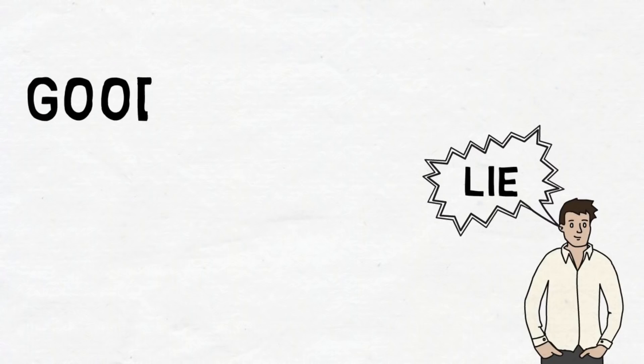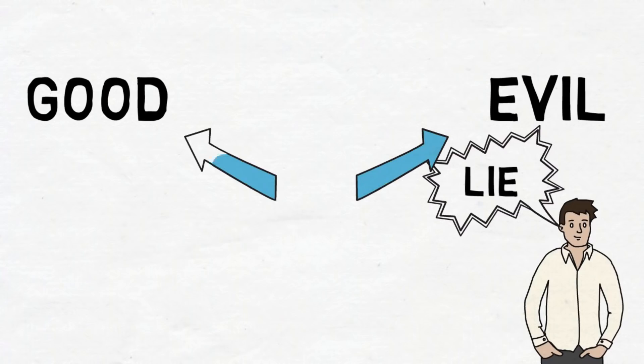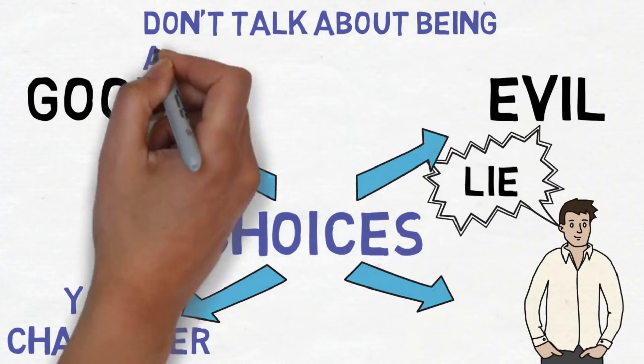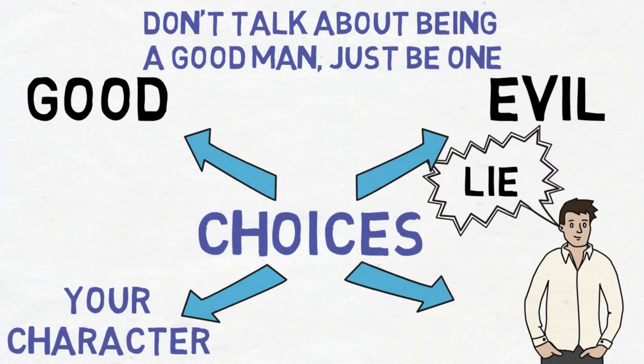Good and evil are the results of actions taken based on choices specific people made. Each action you take will reflect on you and your character. So, as Marcus Aurelius would say, don't talk about being a good man, just be one.